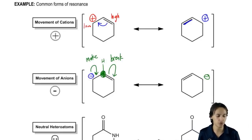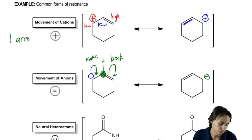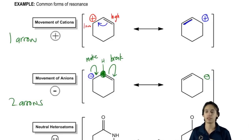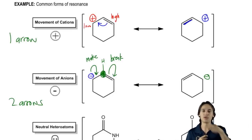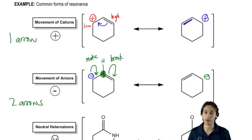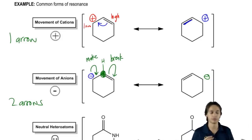What's important to note here is that cations move with one arrow and anions move with two arrows. Positive charges can swing like a door hinge, whereas with a negative charge I use make-a-bond, break-a-bond because I have to preserve the octet of the middle atom.